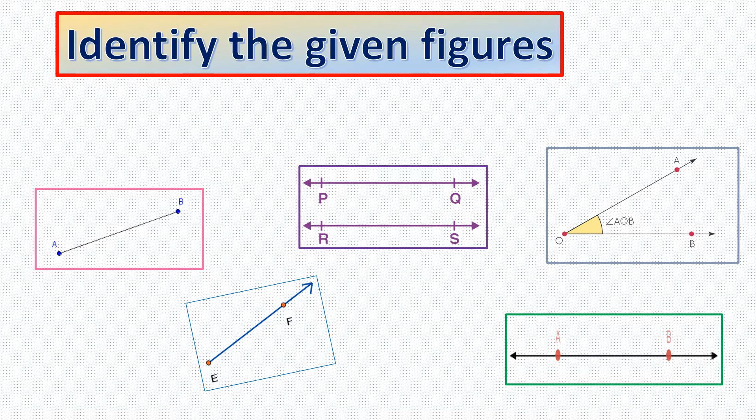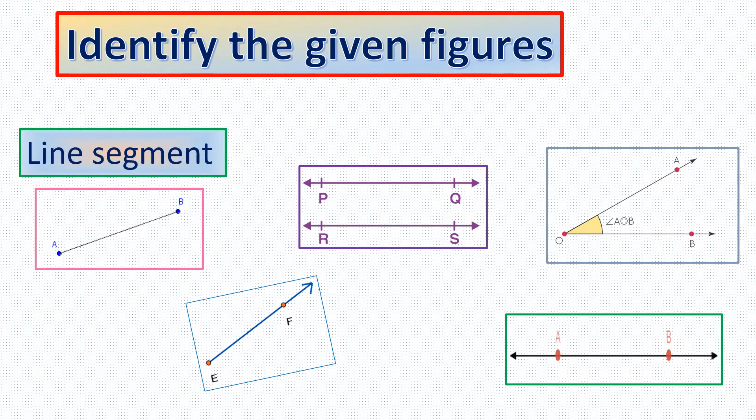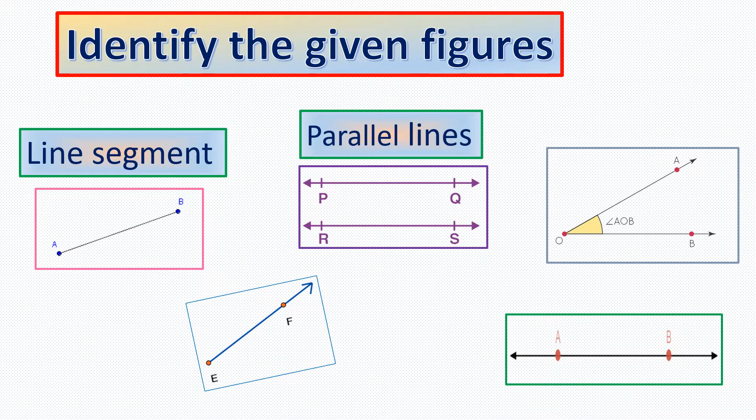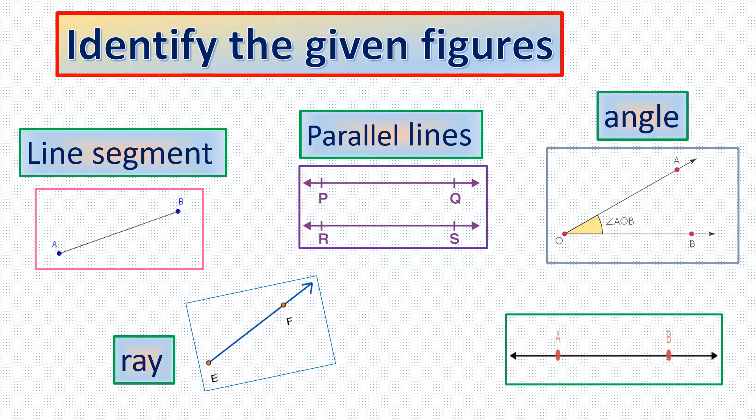Let's identify the geometrical figures and see if your answers are correct. Here is figure 1. What do you think it is? Figure 1 is a line segment. What about figure 2? Figure 2, parallel lines. What about figure 3? This is an angle. Figure 4 is a ray. And lastly, figure 5 is a line.